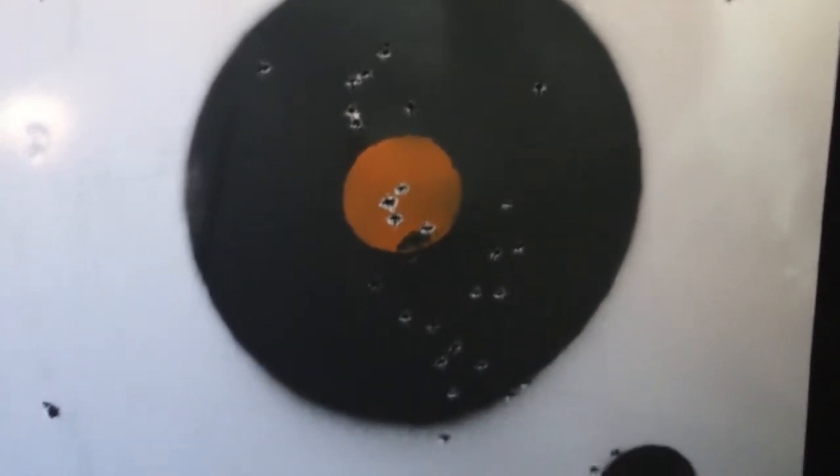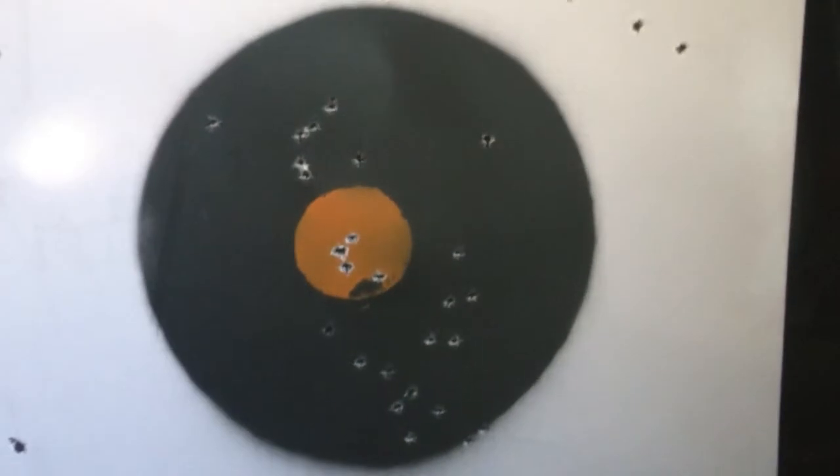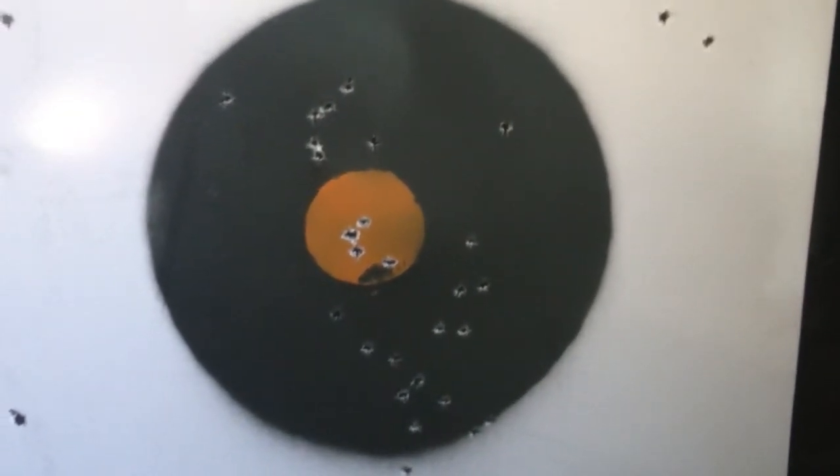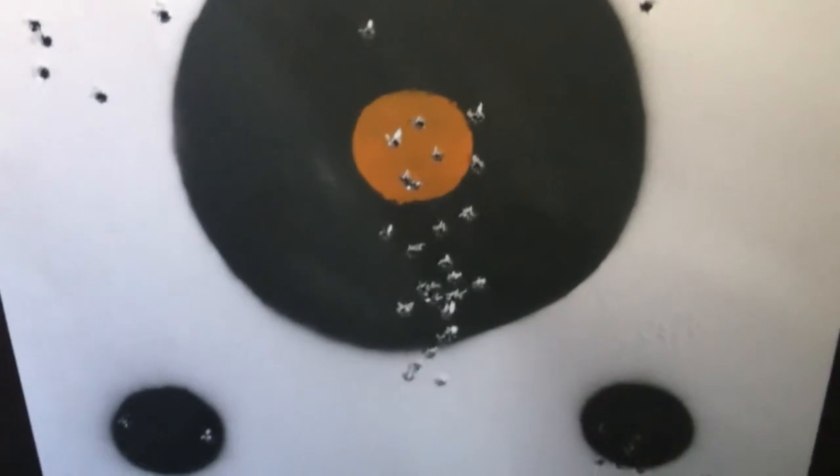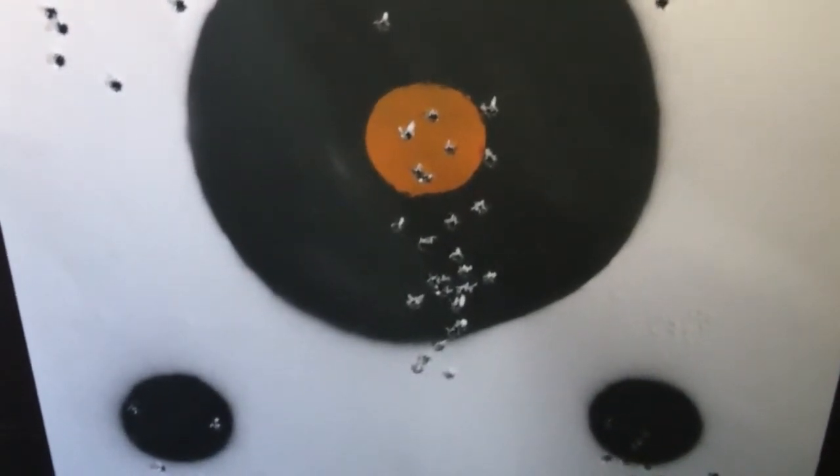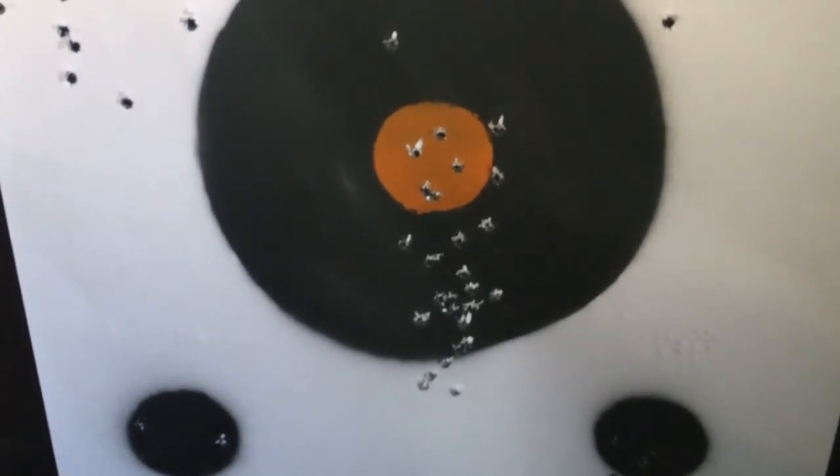Here's the SVT vertical stringing. Yep. Couldn't really get a fix on what to do. Do I need to adjust the front sight higher or lower? I don't know. It's just vertically stringing. Here's the next target. Same thing. Vertically stringing. It's grouping a little low. I could adjust the ramp sight for that. But I mean, I just wanted it to stop doing that.